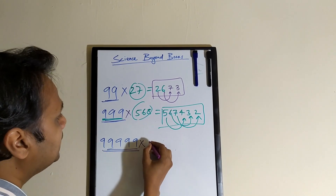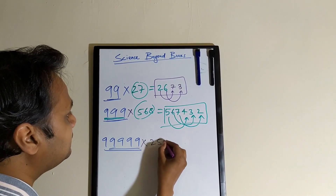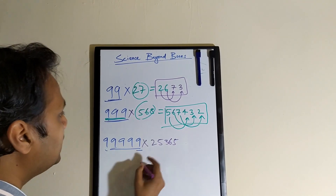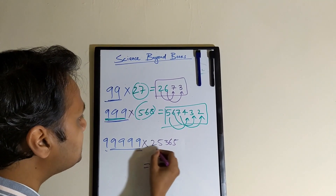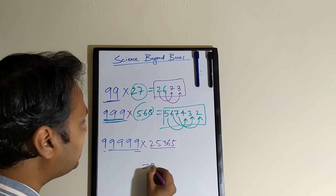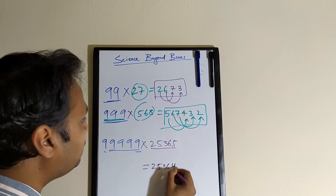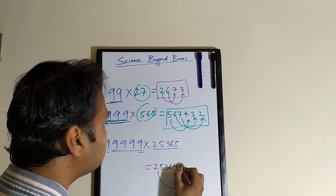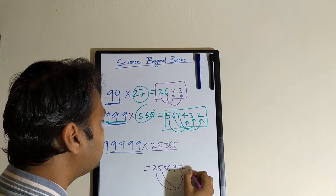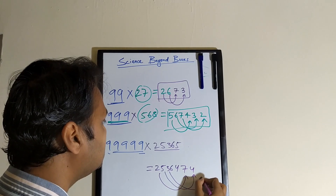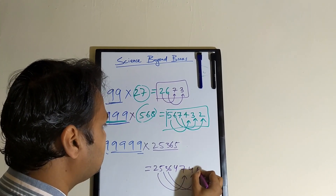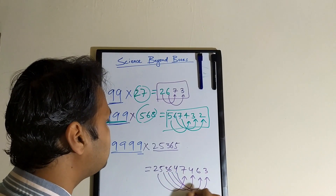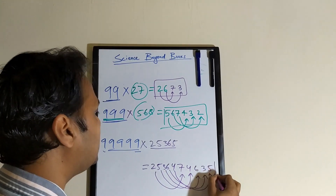Similarly, if we make an even bigger number - let's take 5 digits. Take a random number: 25365. Same digit count, 5-digit and 5-digit. If you want to multiply it, the answer is just subtract 1 from here, so it becomes 25364. Then you subtract each digit from 9: 9 minus 2 is 7, 9 minus 5 is 4, 9 minus 3 is 6, 9 minus 6 is 3, 9 minus 4 is 5. So your answer is 2536474635.